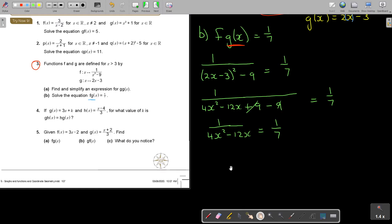And now I cross-multiply. And if I cross-multiply, it's going to give me 4x squared minus 12x equals 7. If I bring everything to one side, because it's quadratic.